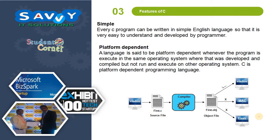First, simple: every C program can be written in simple English language so that it is very easy to understand and develop by a programmer. Platform independent: a language is said to be platform dependent whenever the program runs in the same operating system where it was developed and compiled, but cannot run on other operating systems.